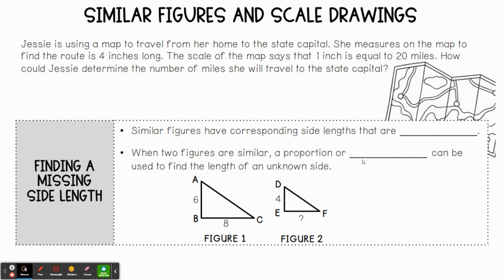A scale model — whether it's a car, a building, or a Lego figurine — they're all scaled down from the original. So what we want to be able to find today is: what if we're missing one side length? Could we find the height or the side length of whatever we're looking for if we know one other measurement?